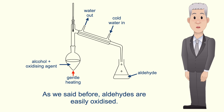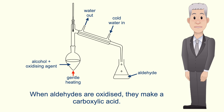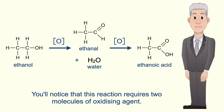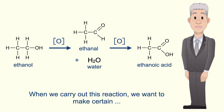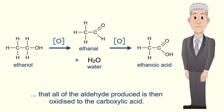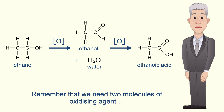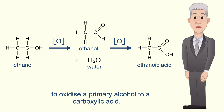Aldehydes are easily oxidized and when aldehydes are oxidized they make a carboxylic acid. I'm showing you here the oxidation of ethanol to ethanal and then to ethanoic acid. You'll notice that this reaction requires two molecules of oxidizing agent. When we carry out this reaction we want to make certain that all of the aldehyde produced is then oxidized to the carboxylic acid. To do this we need to use an excess of oxidizing agent — remember that we need two molecules of oxidizing agent to oxidize a primary alcohol to a carboxylic acid.